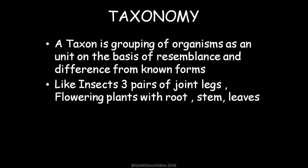A taxon is a group of organisms as a unit on the basis of certain resemblances or differences from known forms, so they are grouped together. For example, insects have three pairs of jointed legs, so they are grouped together. Similarly, flowering plants with root systems, stems, and leaves are grouped together.